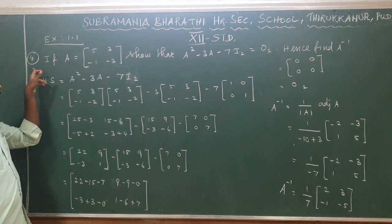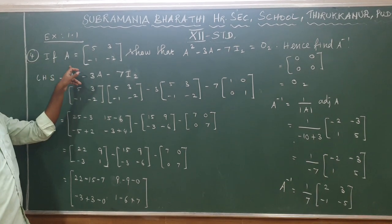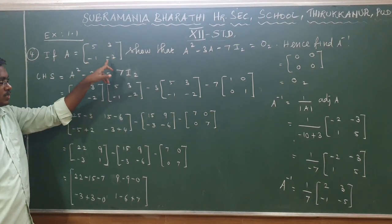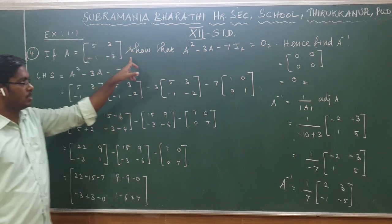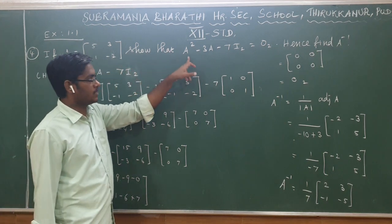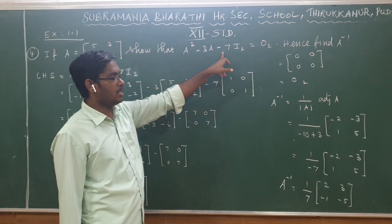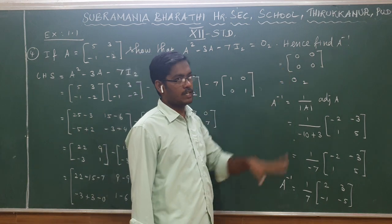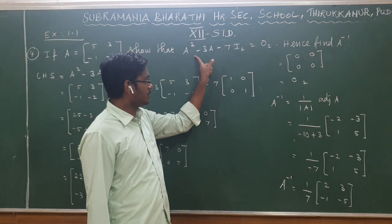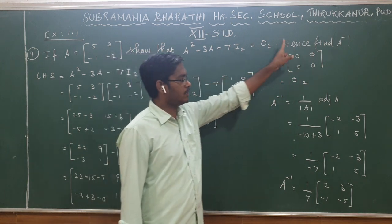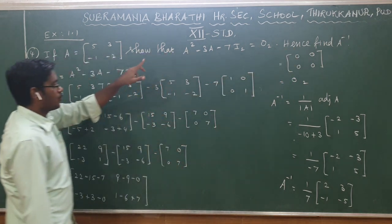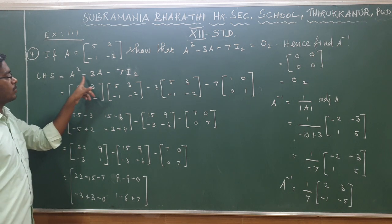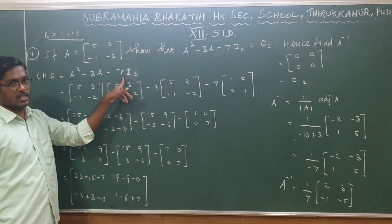Sum number 4: if A equals the 2×2 matrix [[5,3],[-1,-2]], show that A² - 3A - 7I₂ = 0, and hence find A inverse. First, we work on the proof, then find A inverse. So for the proof, we start with A² - 3A - 7I₂.